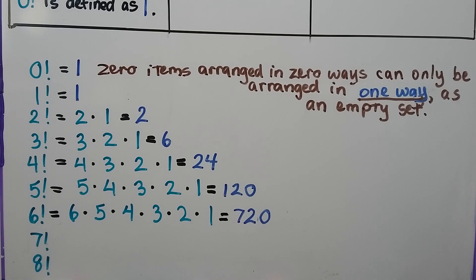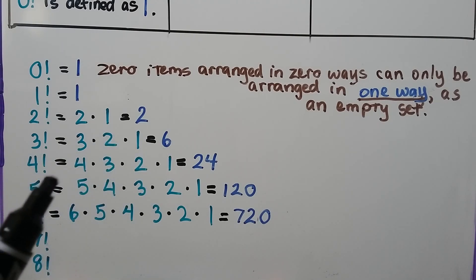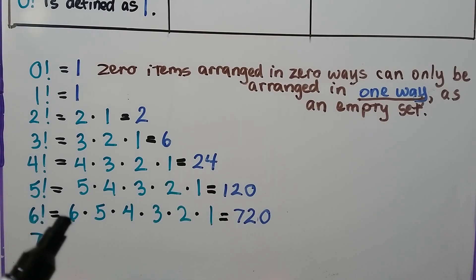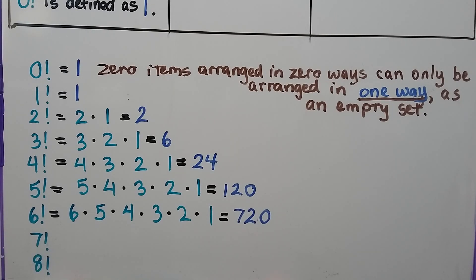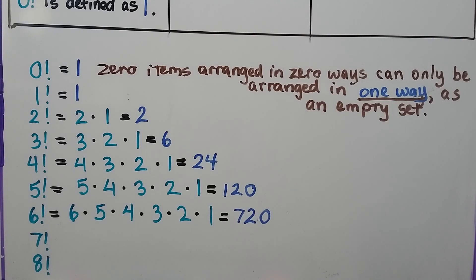One factorial is equal to one. Two factorial is two times one — that's equal to two. Three factorial is three times two times one — that's six. Four factorial is four times three times two times one. Five factorial is five times four times three times two times one. Six factorial starts with a six and then slowly goes down to one, and we could do seven factorial, eight factorial, a million factorial. Generally, these first several values are memorized by many mathematicians — they just know four factorial equals 24, or three factorial is six, like they memorized the times tables.